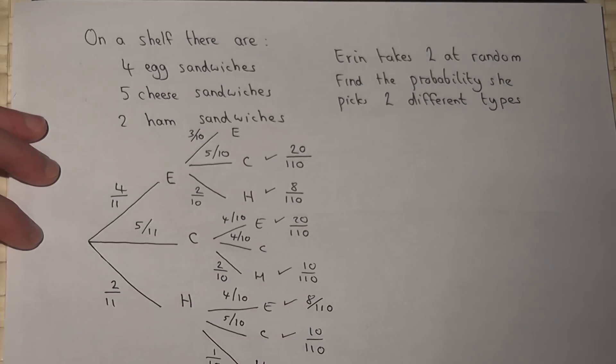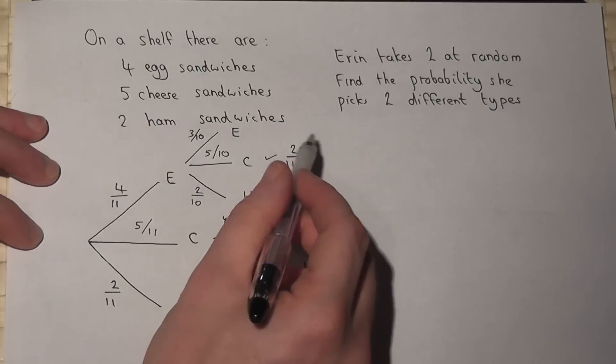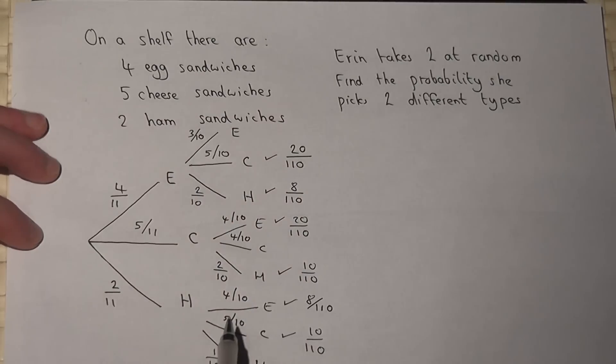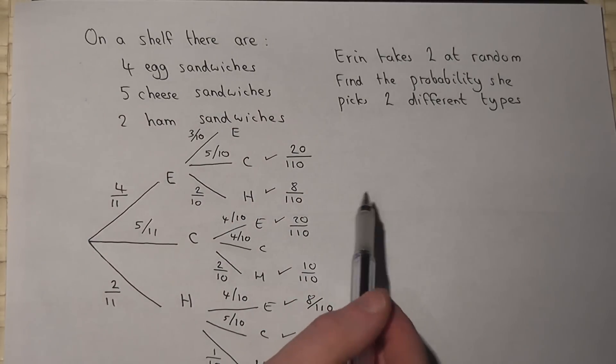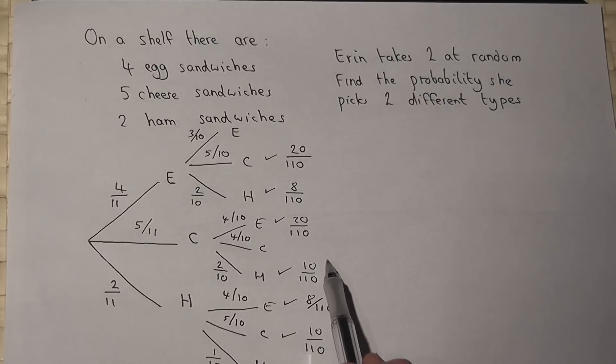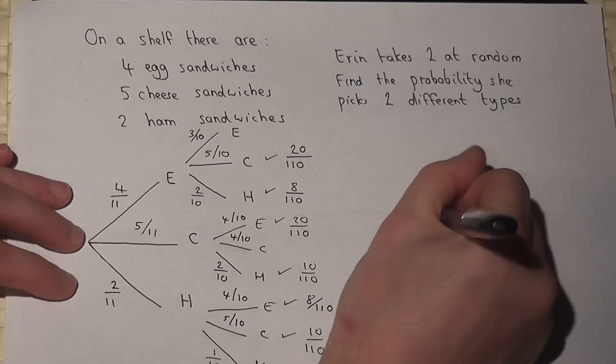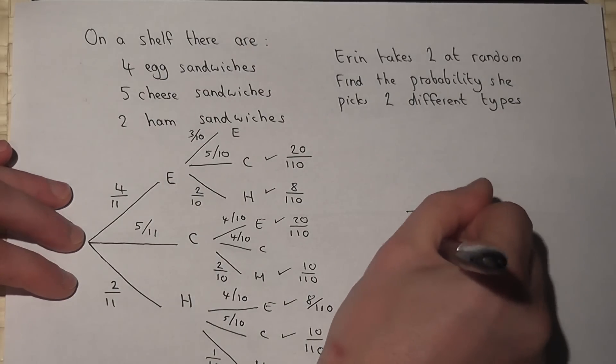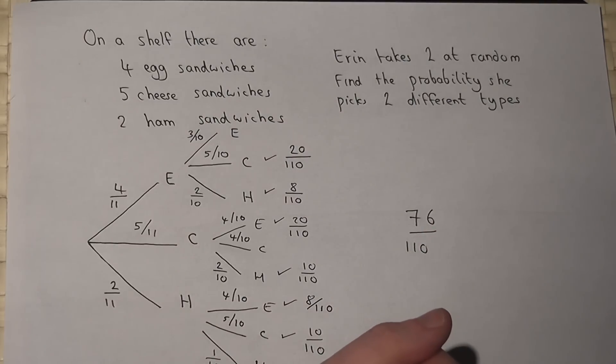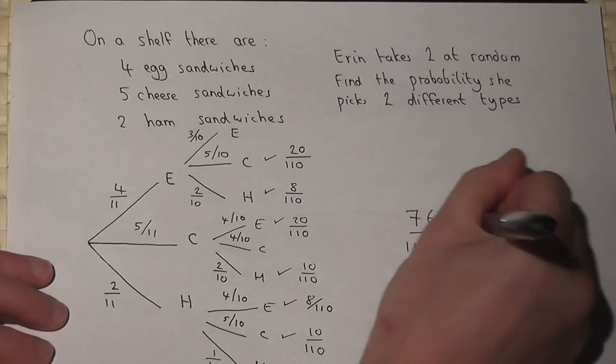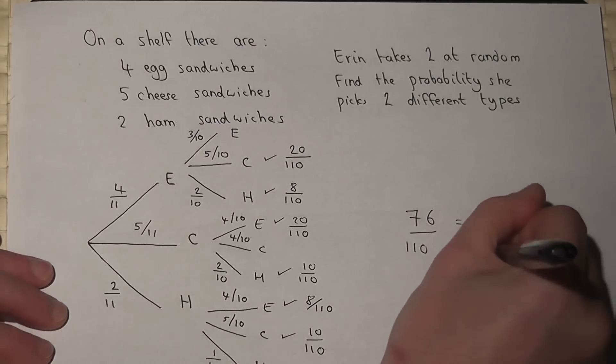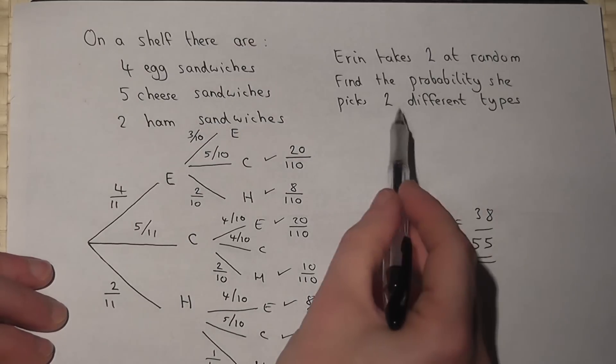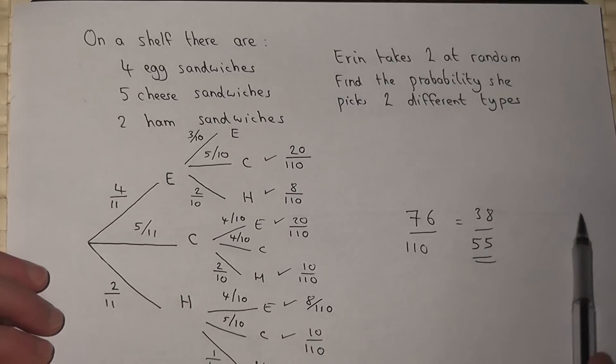There were six options, so therefore the overall probability is the sum of all of these. So we do 20 plus 8 plus 20 plus 10 plus 8 plus 10, which works out to 76 all over 110. And 76 over 110 works out to be 38 out of 55. So the chance that Erin picks two different types is 38 out of 55.